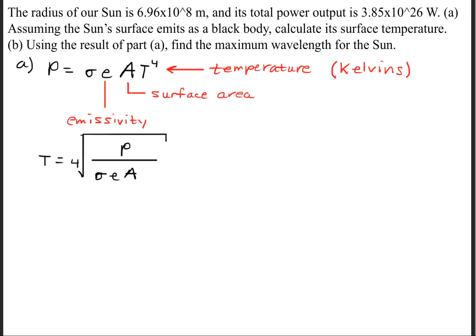The next thing we're going to do is rearrange the formula so that we isolate the temperature. So we get the fourth root of the power divided by sigma times the emissivity times the surface area.